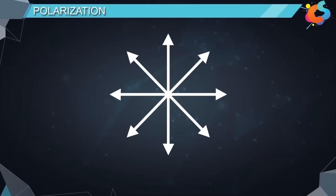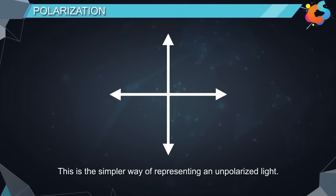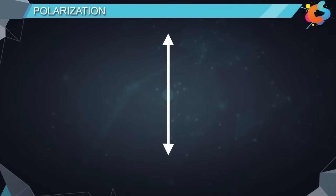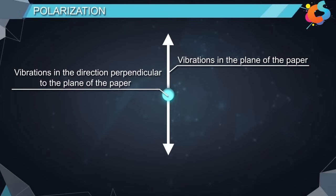The electric field vectors in unpolarized light can be resolved into vertical and horizontal components. This is the simpler way of representing an unpolarized light. However, this is only a front view of the wave. On the side view, the wave is represented in a different way. Here, the arrows represent vibrations in the plane of the paper, and the dots represent vibrations in the direction perpendicular to the plane of the paper.